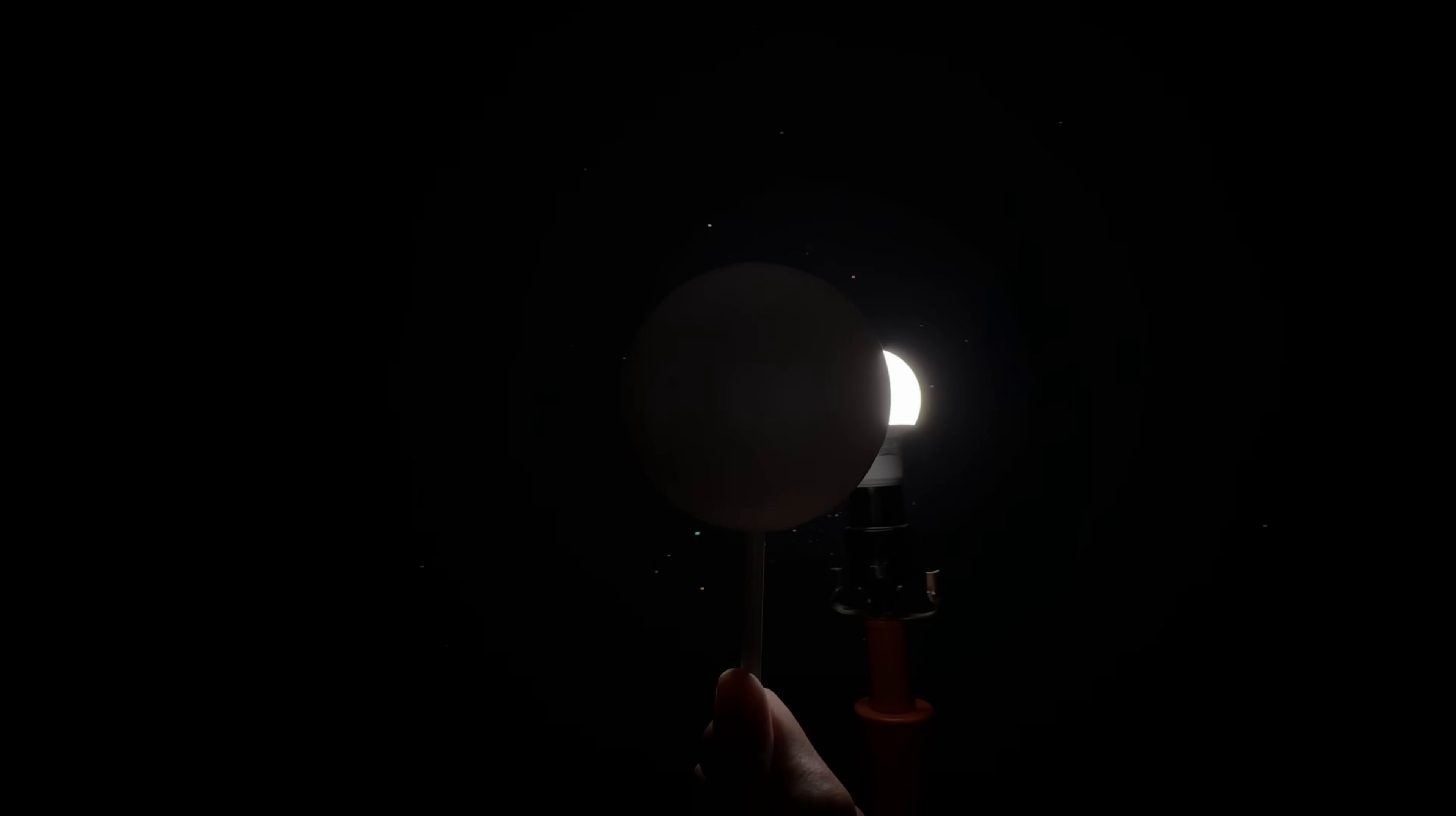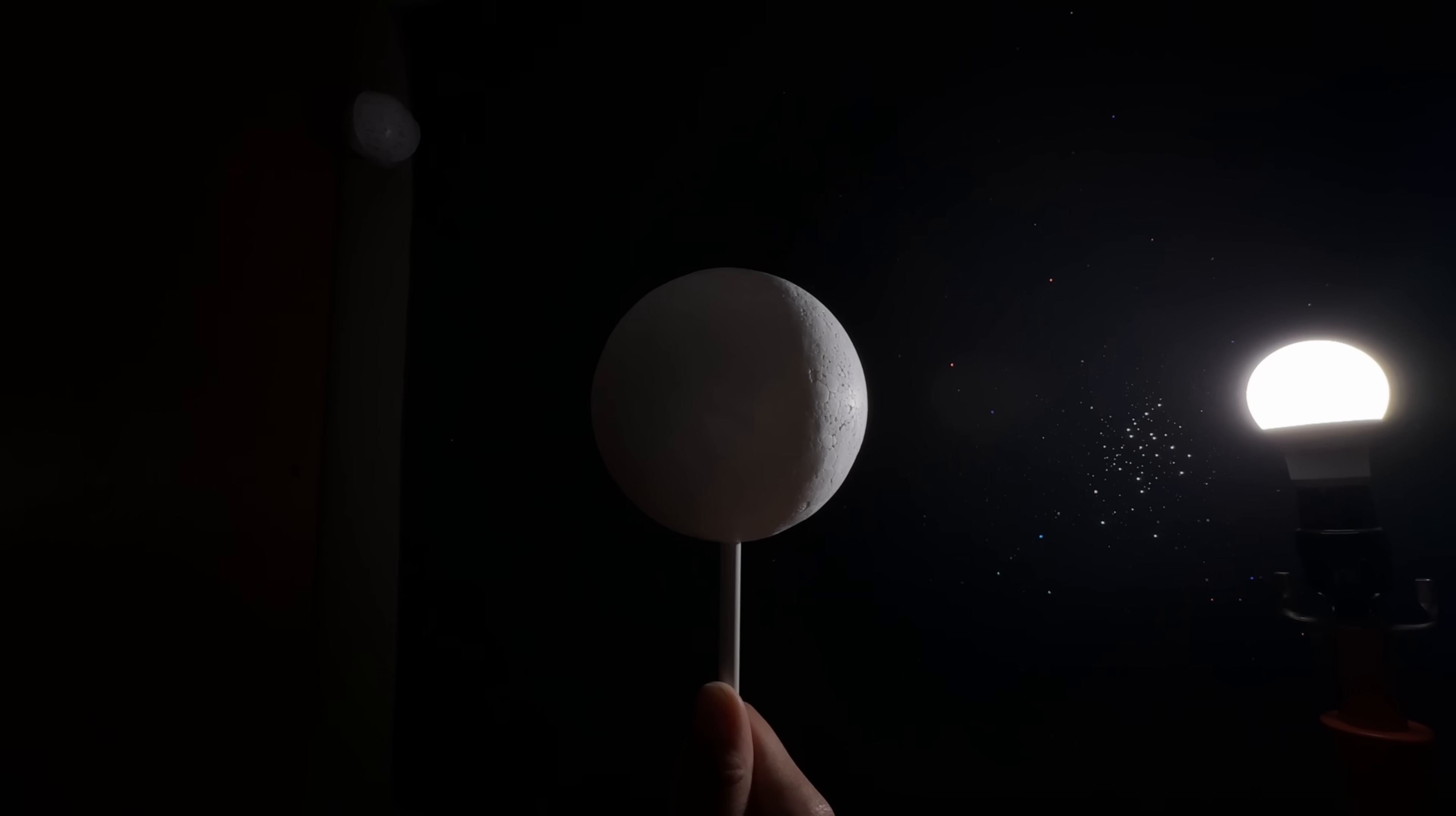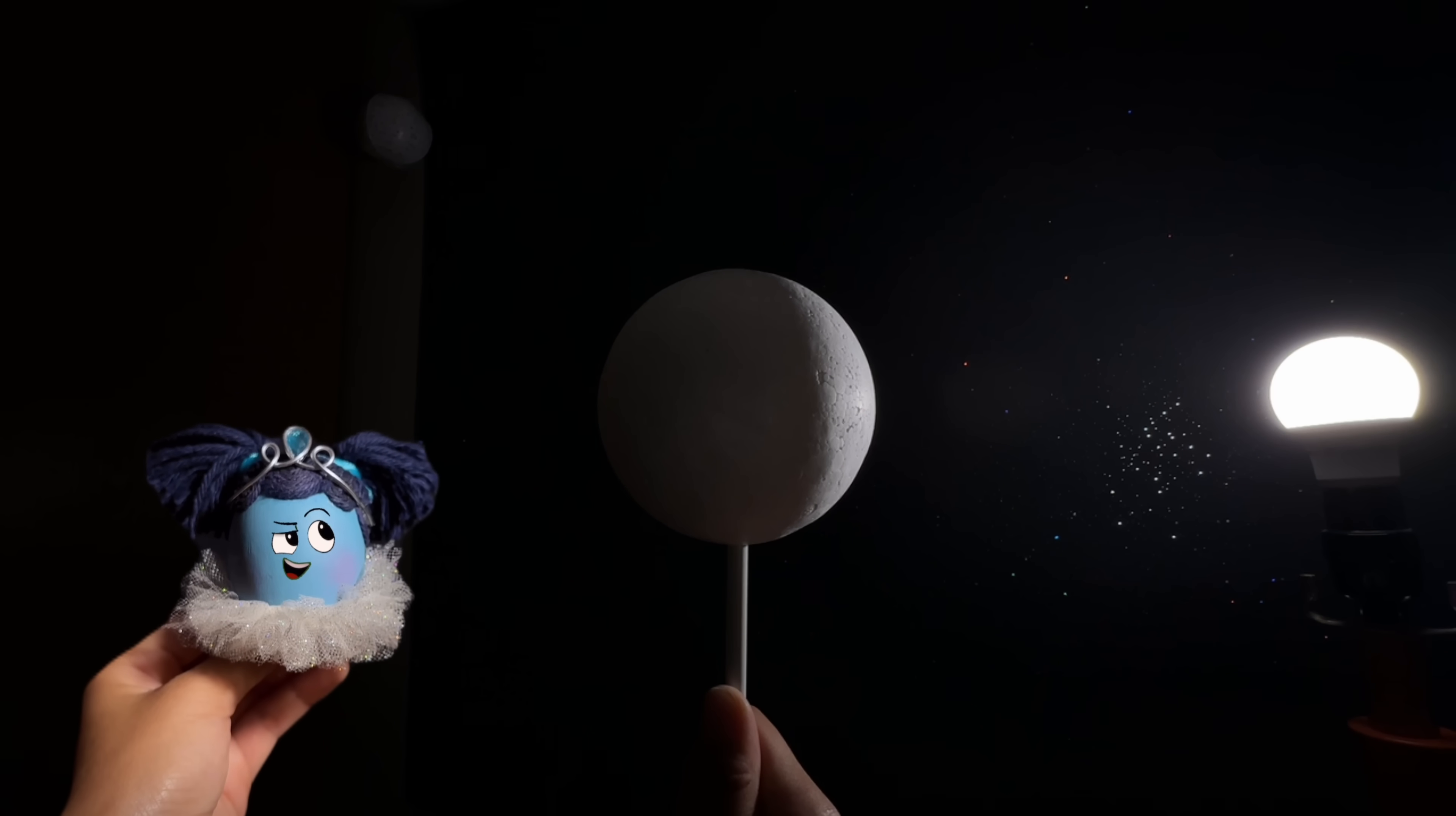When the moon starts its orbit, you'll see a glowing edge like a banana. This is called the crescent moon.